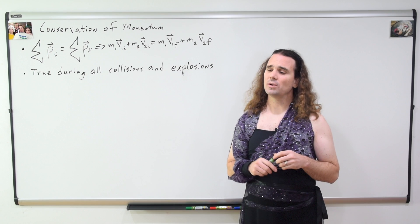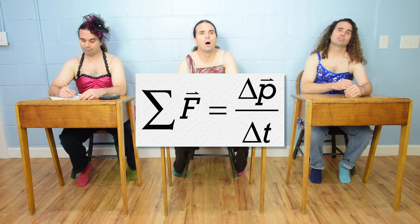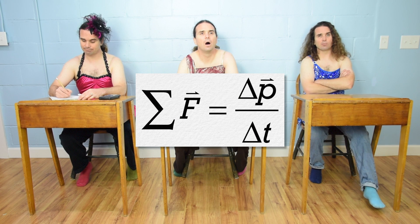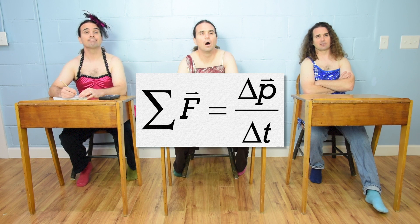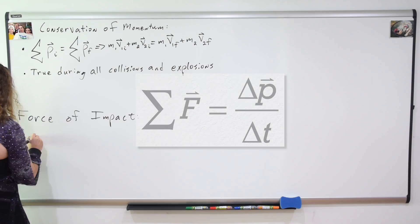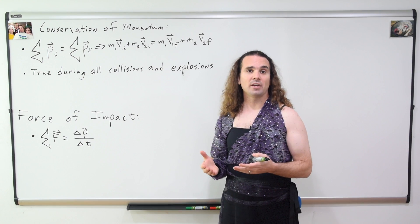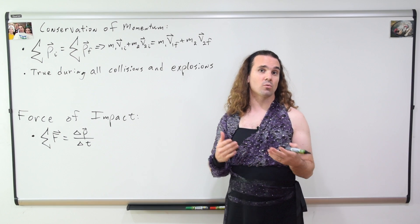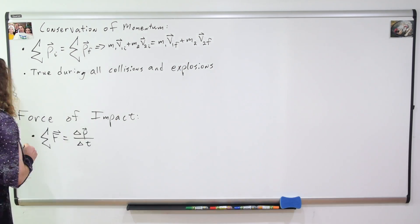Bo, what is the equation for the force of impact? Net force equals change in momentum over change in time, where both force and momentum are vectors. Clearly, we use this equation when we are solving for, or are working with, the force of impact during a collision.